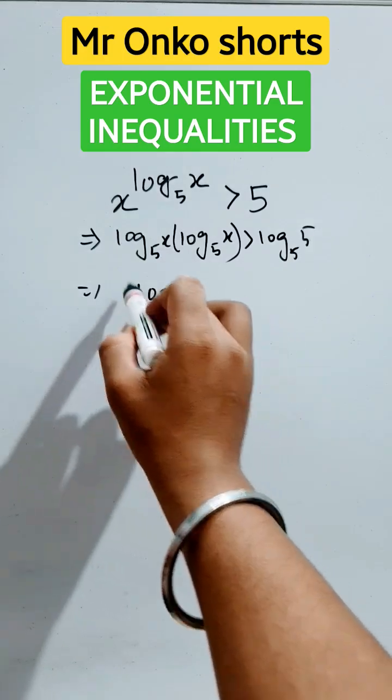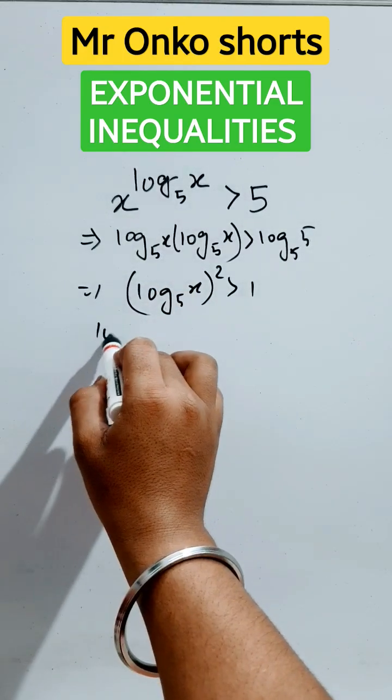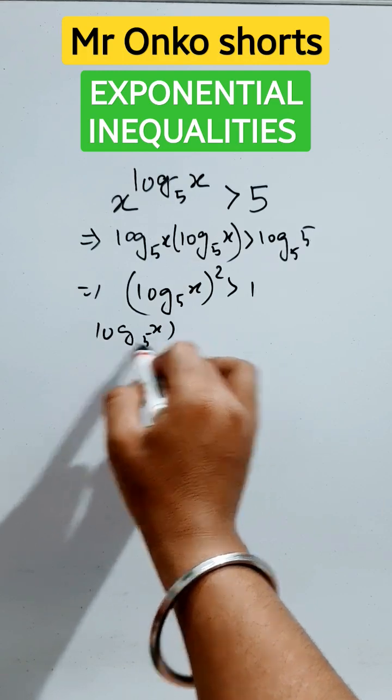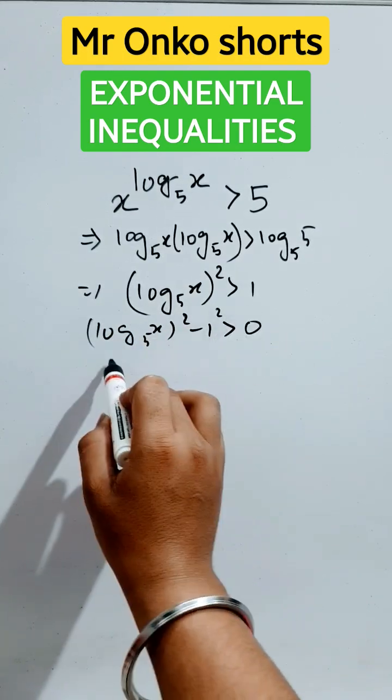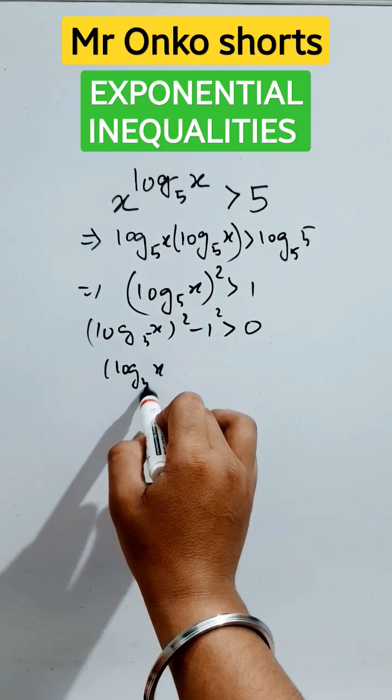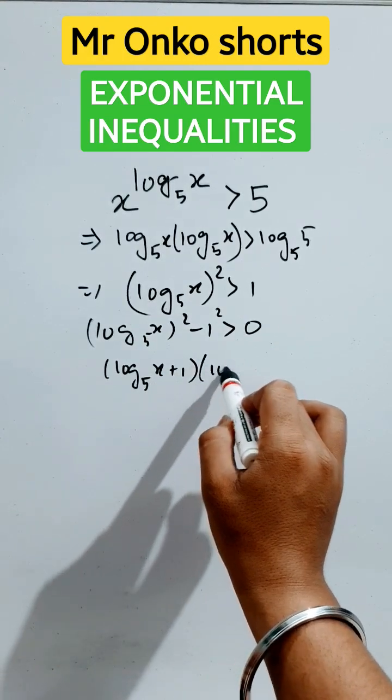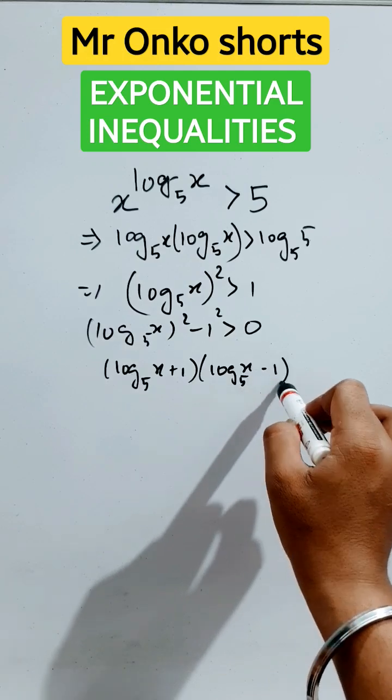Logarithm x to the base 5 whole square is greater than 1. So we can bring this 1 in the left side, and a square minus b square, it will be logarithm of x to the base 5 plus 1, logarithm of x to the base 5 minus 1, greater than 0.